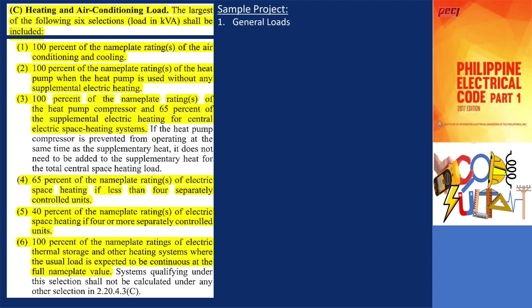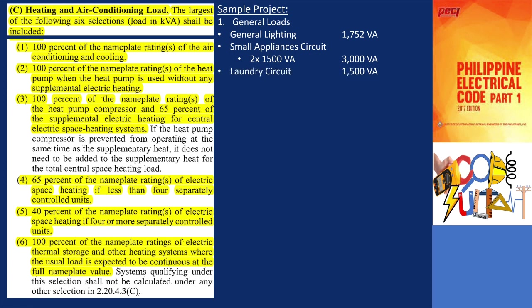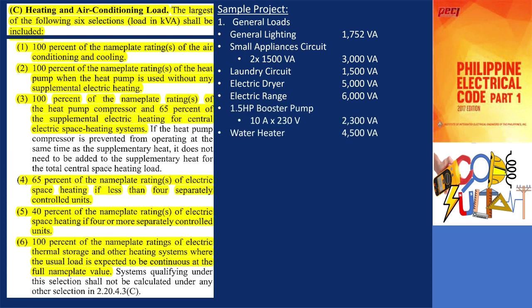Applying this to our sample project — for general loads, we have: general lighting at 1,752 volt amperes; two 20A small appliance branch circuits at 1,500 volt amperes each; one laundry circuit at 1,500 volt amperes; and all appliances fastened in place except heating and air conditioning. That includes the electric dryer at a minimum of 5,000 volt amperes, a 6,000 volt ampere electric cooking range, a 1.5 horsepower booster pump at 2,300 volt amperes, and a 4,500 volt ampere storage water heater. The total is 24,052 volt amperes. As specified in section 2.20.4.3b, the first 10,000 volt amperes are at 100% demand and the remaining at 40% demand factor.